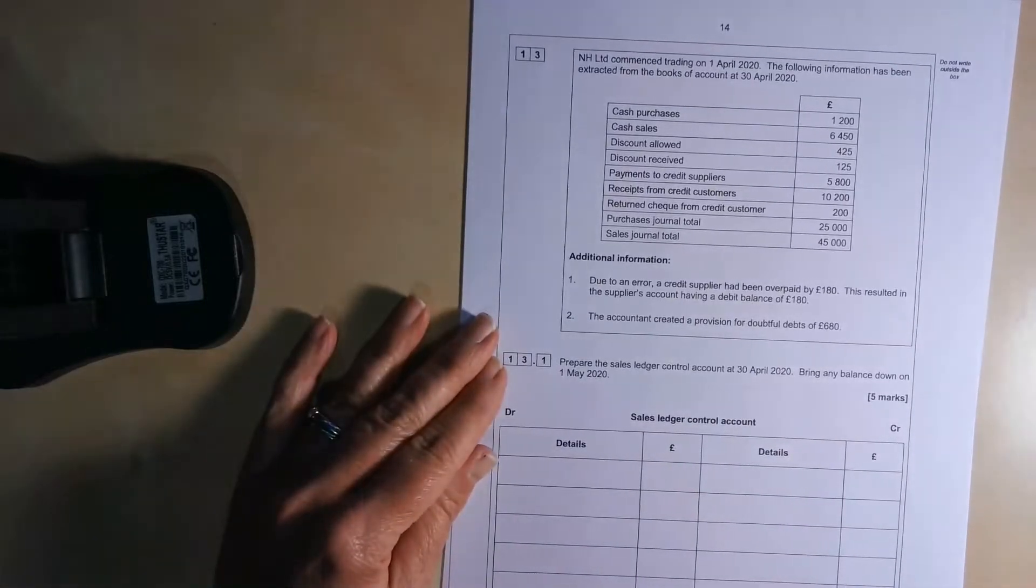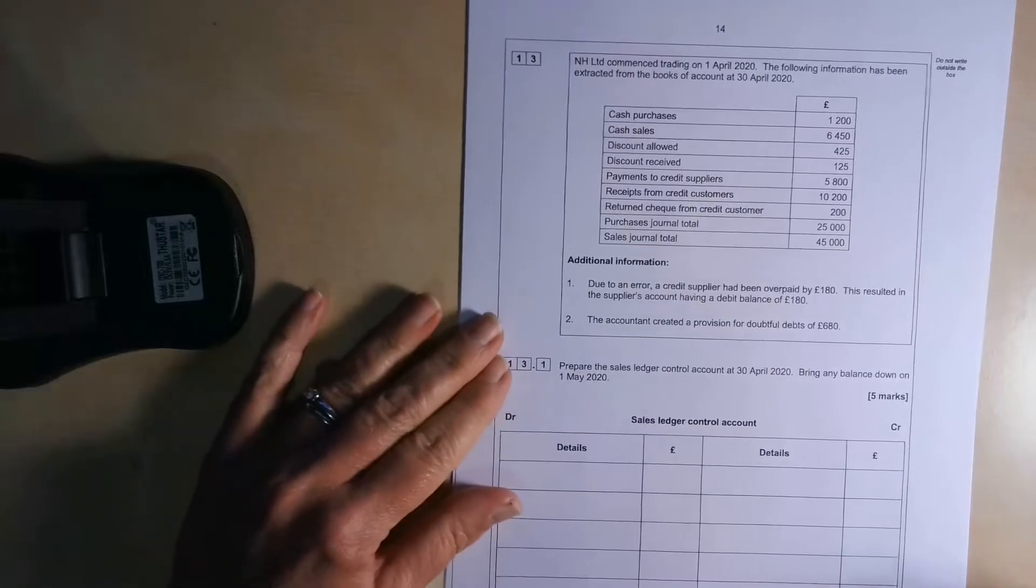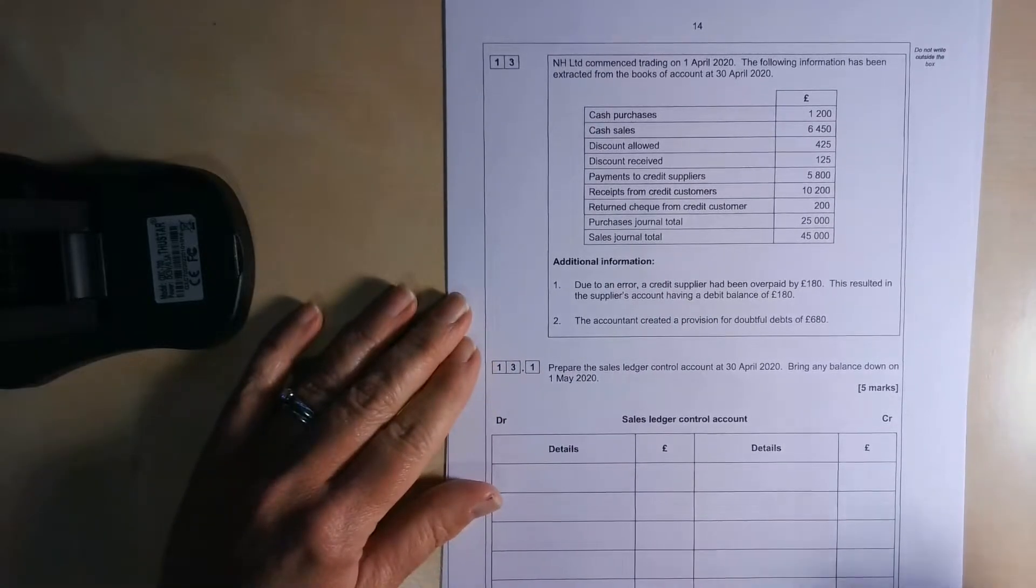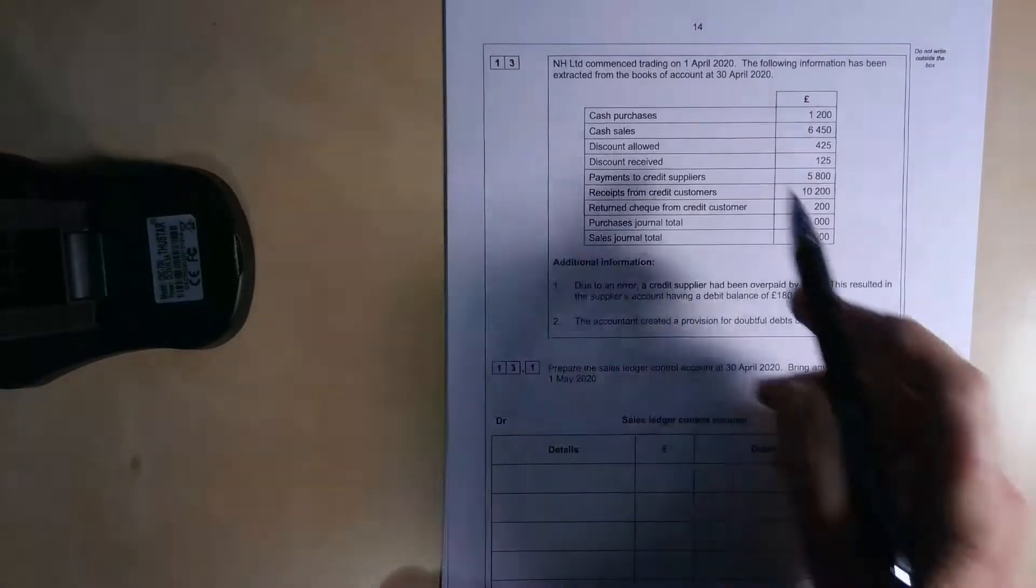NH Ltd. This question came from the AS paper, so the 7126 specification paper from 2020. And it's a little straightforward one on control accounts.